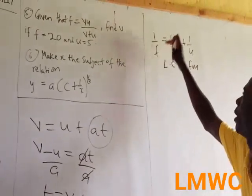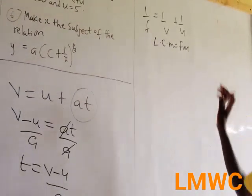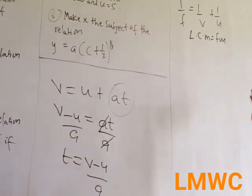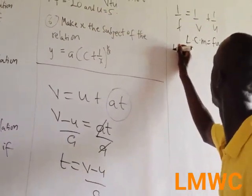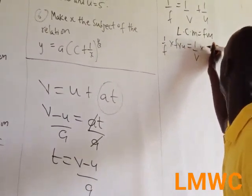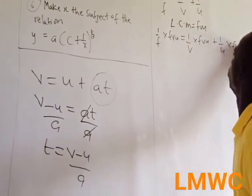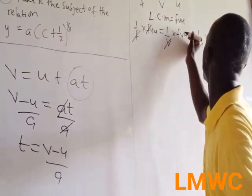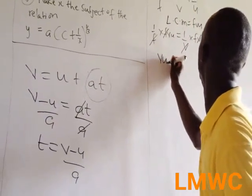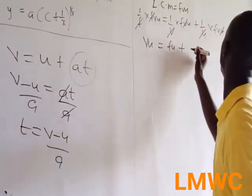If the denominators were a, b, c, the LCM will become a·b·c. Take note. You multiply through by the LCM to eliminate the fraction. So it becomes (1/f)·fvu = (1/v)·fvu + (1/u)·fvu. This will cancel: f cancels f, v cancels v, u cancels u. So 1 times vu = vu, equal to 1 times fu + 1 times fv, which is fv.